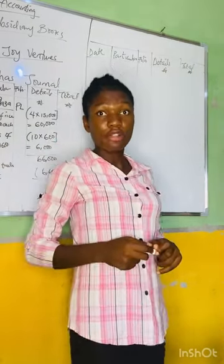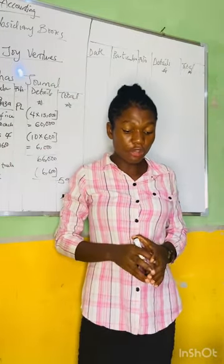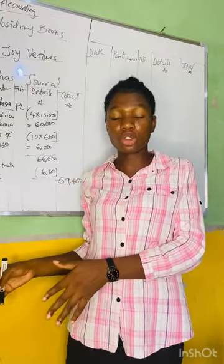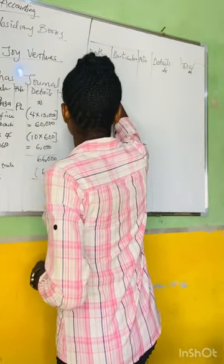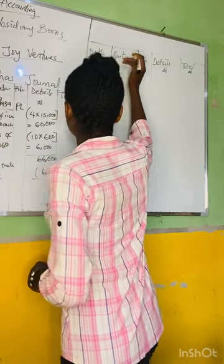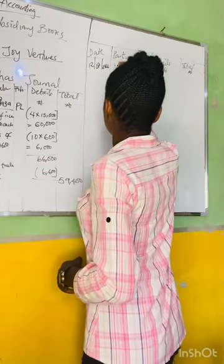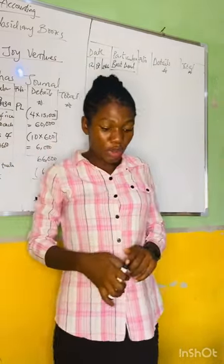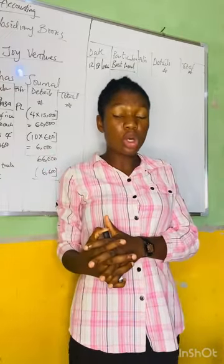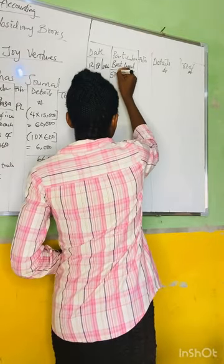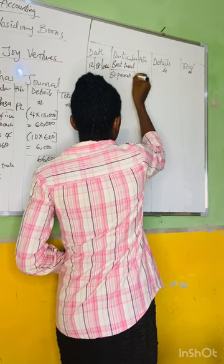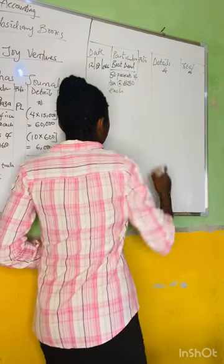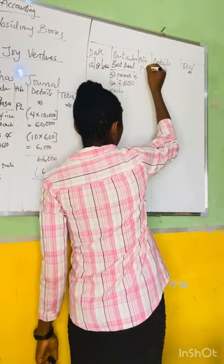On the 12th of July 2016, we bought the following items at a discount of 5% from Best Deal, which is another creditor. We enter the date — 12th of July 2016 — and identify the creditor: Best Deal. From Best Deal, we bought 50 packets of tea at 250 naira each.